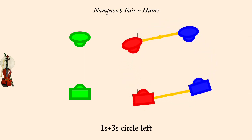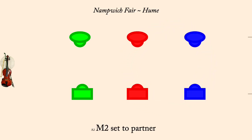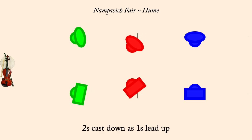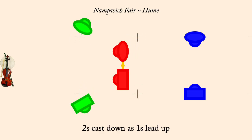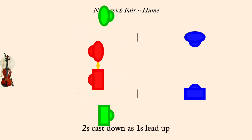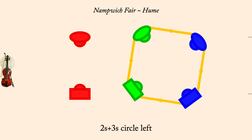Man two set. Twos cast down as ones lead up. Twos and threes circle left.